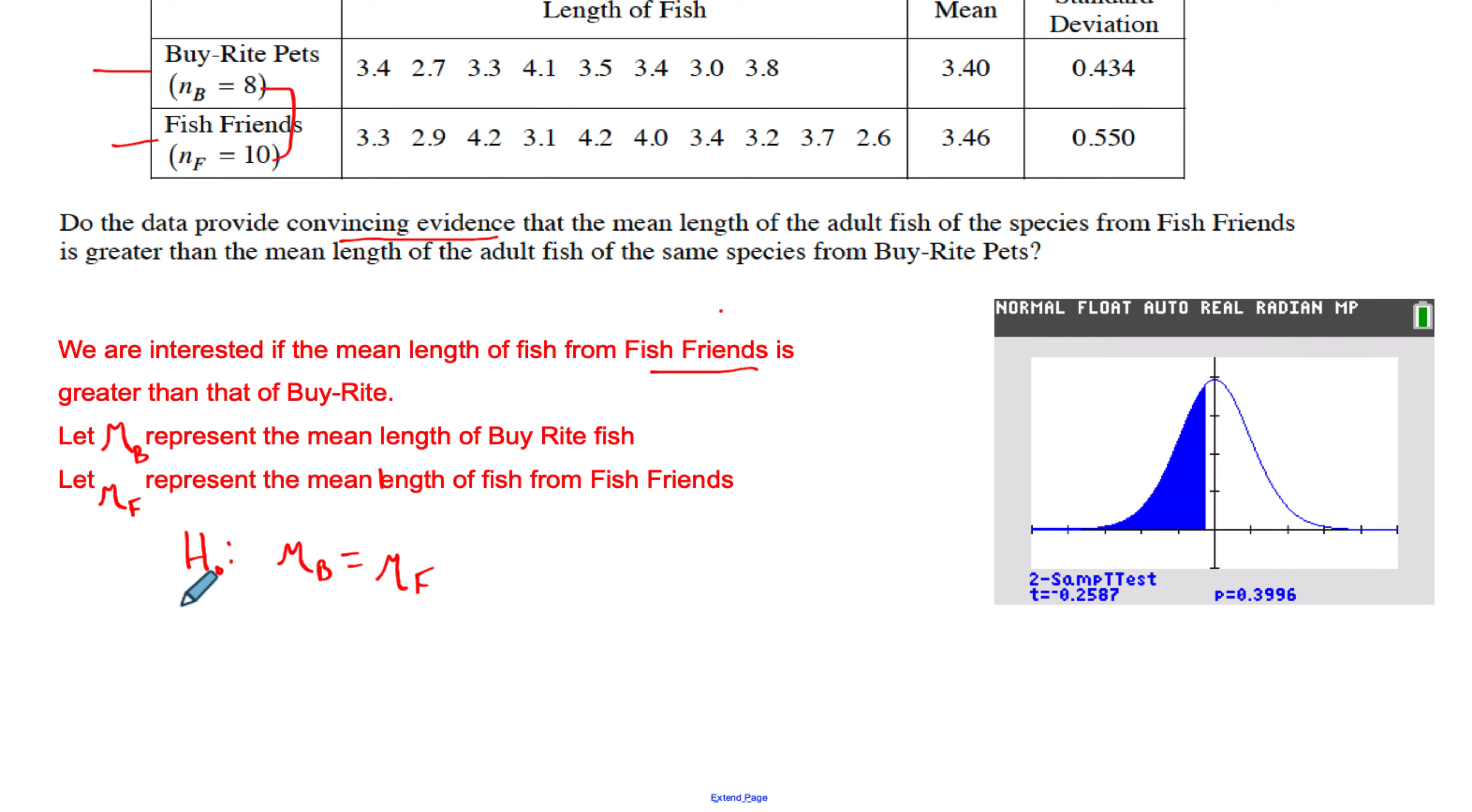The null hypothesis, remember the null is always that there's no difference, so I'm going to write it like this: μ_B is equal to μ_F. The alternative hypothesis would be that Fish Friends is greater than Buy Rite, so the alternative would be that μ_B is less than μ_F, or in other words, Fish Friends is greater than Buy Rite. Those are our hypotheses. That is one-sided.